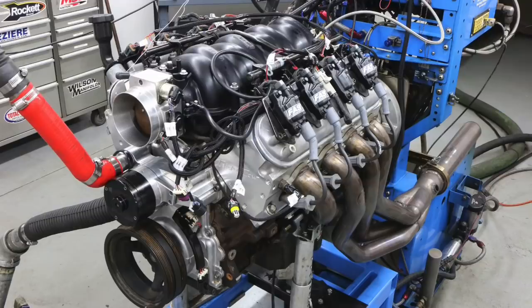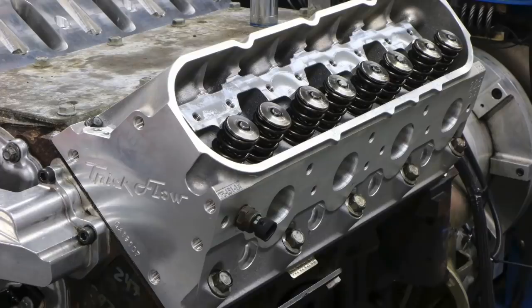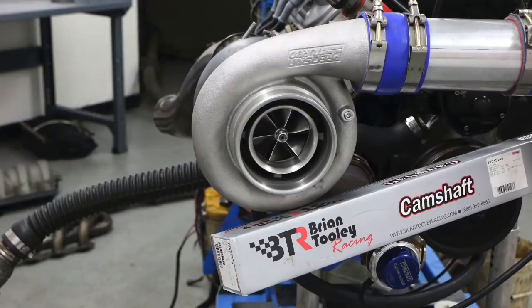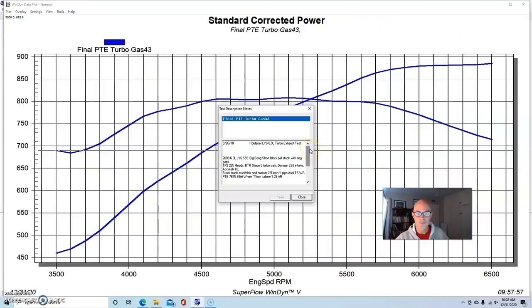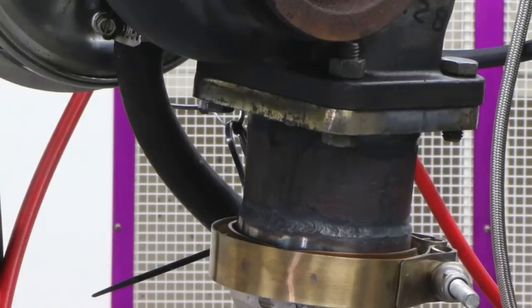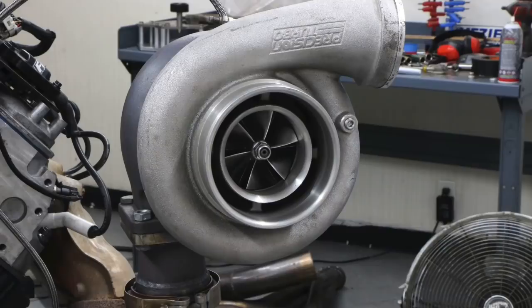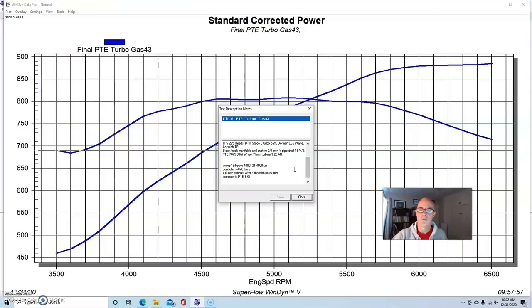To demonstrate that, we added a turbo to our 6.0 liter combination. This was our big bang motor equipped with the TFS heads, the Stage 3 BTR turbo cam, and then we added our stock truck exhaust manifolds with a custom Y-pipe. It's a 2.5 inch section Y-pipe with two TurboSmart 45mm wastegates on it. It ends in a 3 inch V-band, then we have a V-band to T4 adapter that we ran our turbo on. The turbo that we ran was a Precision 7675 with a billet wheel and a 1.28 AR on the hot side.